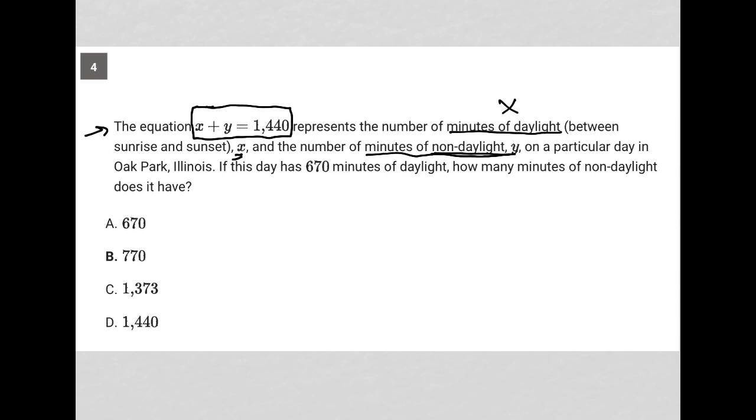If this day has 670 minutes of daylight, that tells us that X is equal to 670. How many minutes of non-daylight does it have? So what is the value of Y?